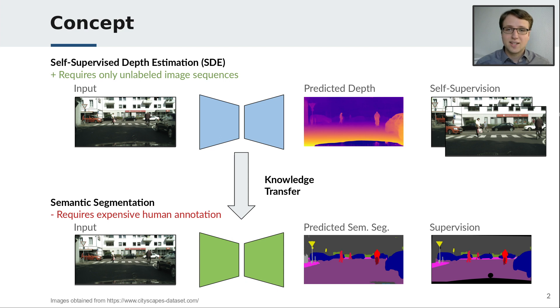The knowledge transfer is realized in three ways, which are transfer and multitask learning, DepthMix data augmentation, and automatic data selection for annotation. Our approach has the advantage that it can learn from a large base of easily accessible unlabeled image sequences and utilize the learned knowledge to improve semantic segmentation performance in various ways.